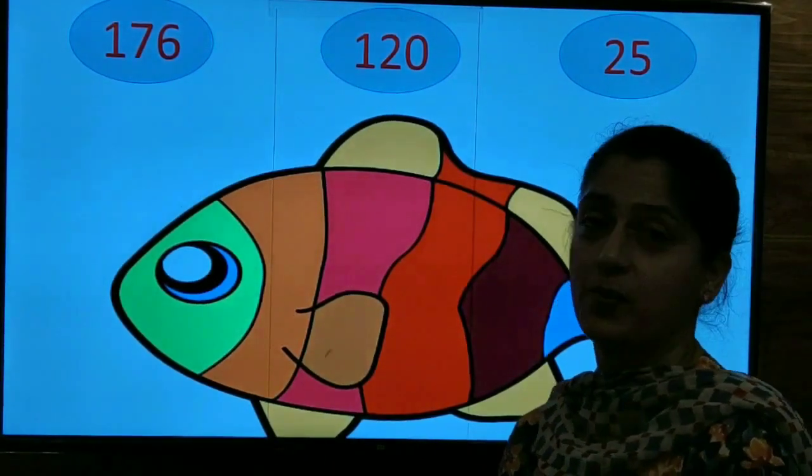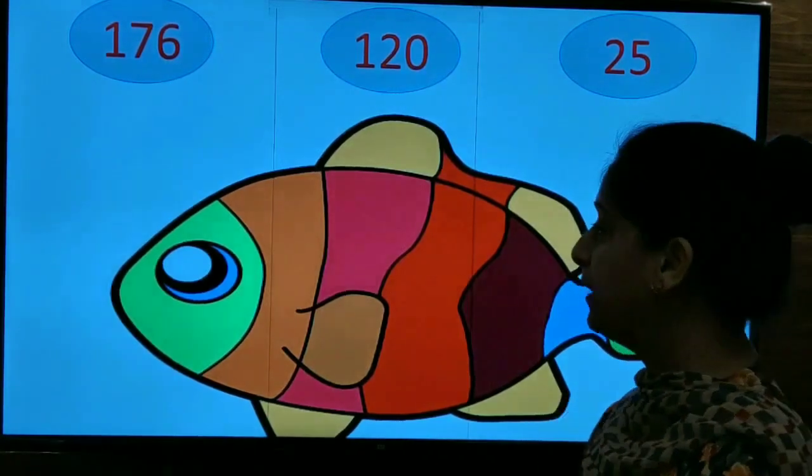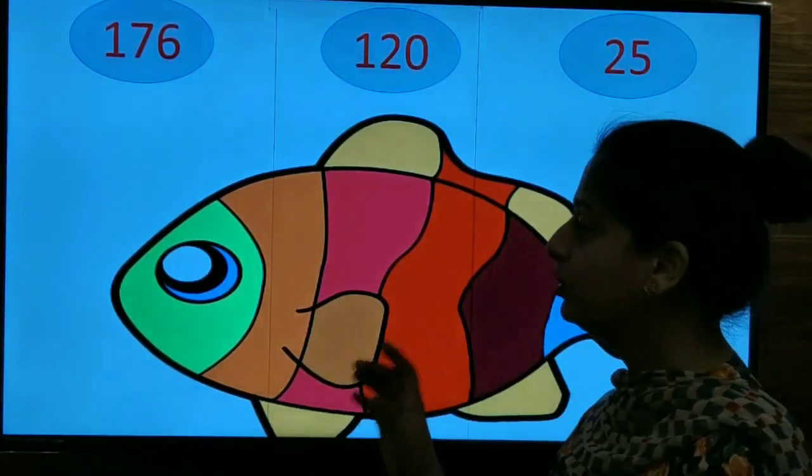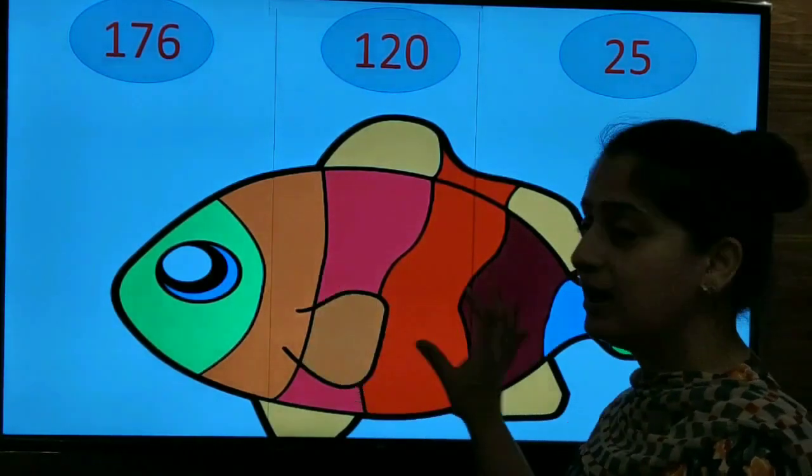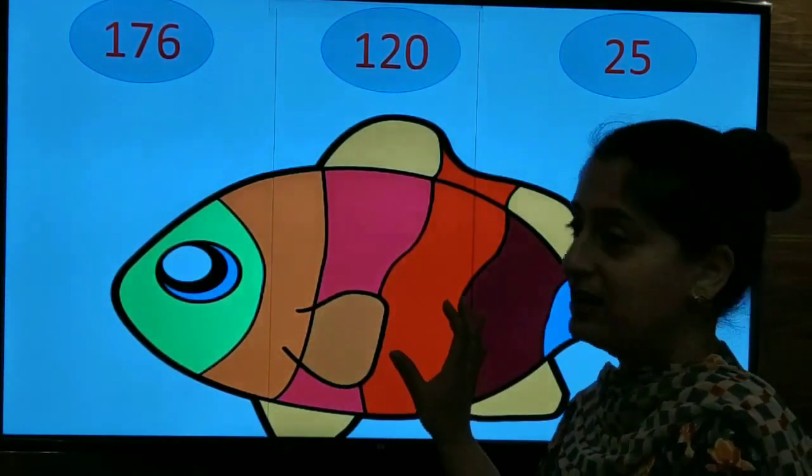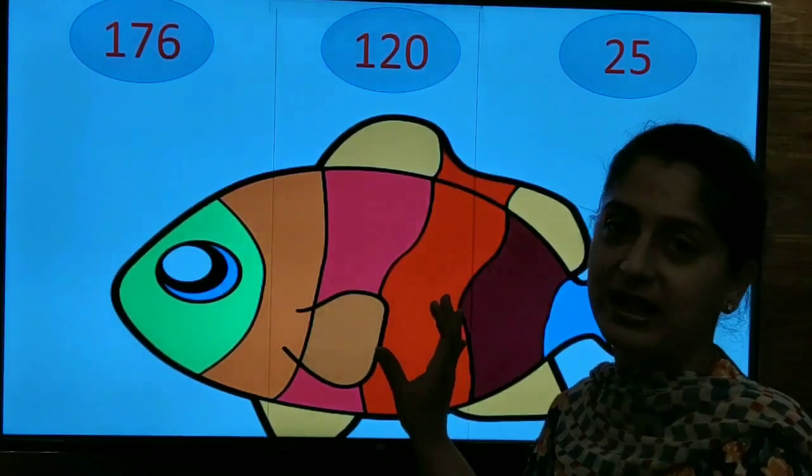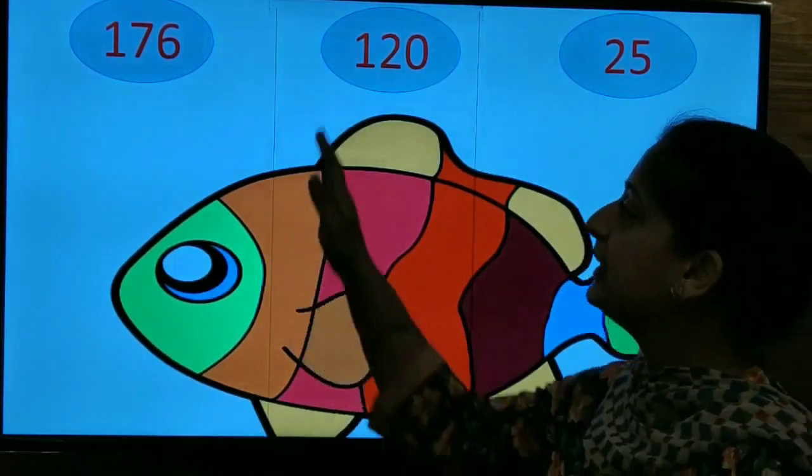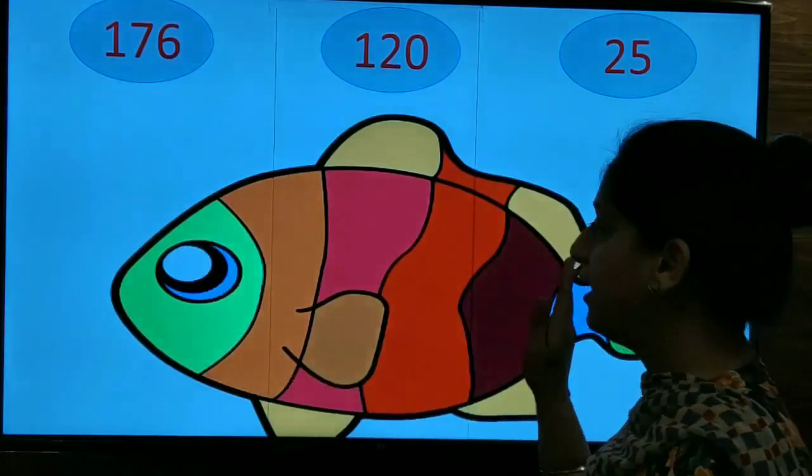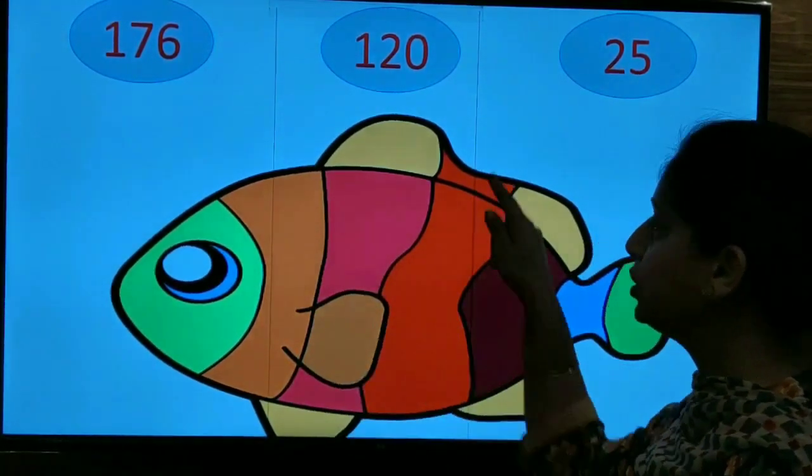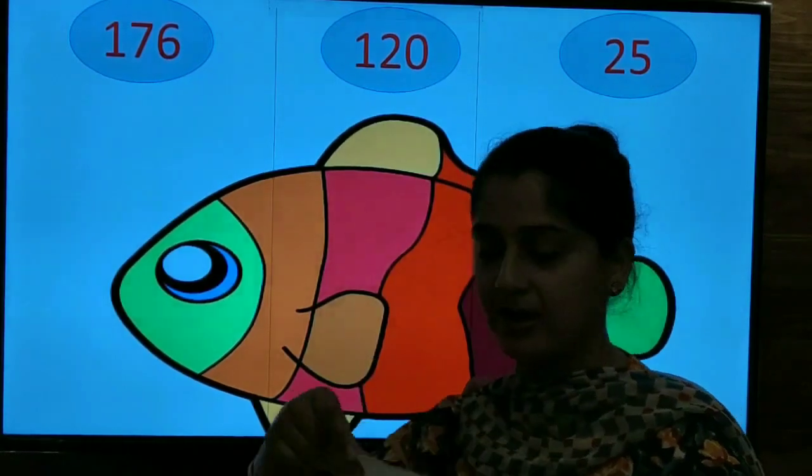Children, it's a very interesting activity. It's a kind of a puzzle. Now you are going to make one figure. Here I have drawn a fish because I love to draw a fish. Whatever you like to draw, draw it and cut that figure into three parts. Here I have divided this fish into three parts.